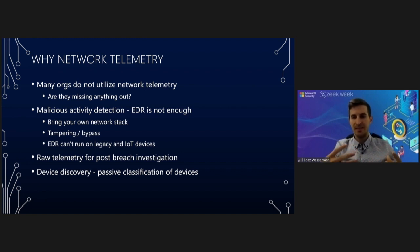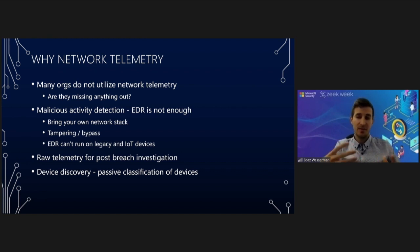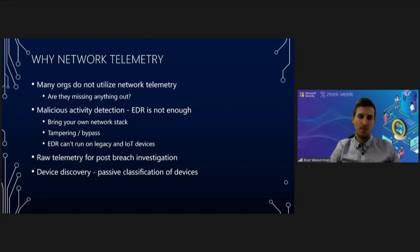First, a classic EDR mainly looks at OS-level activity — process activity, file activity — and it may hook some process-level APIs like DNS API, SMB, or RPC. But we see a lot of attackers today bringing their own network stack into the environment. It doesn't have to be complicated; they could simply have a Python script or tool. Many open-source attacker tools implement their own higher-level protocols like DNS, RDP, or SMB to perform malicious activity.